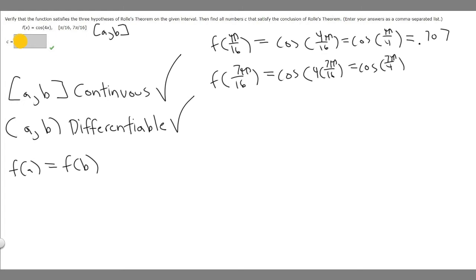So cosine of 7 pi divided by 4, when you do that you should get the same thing which is 0.707. So then that means this also checks out, so F of B equals F of A.